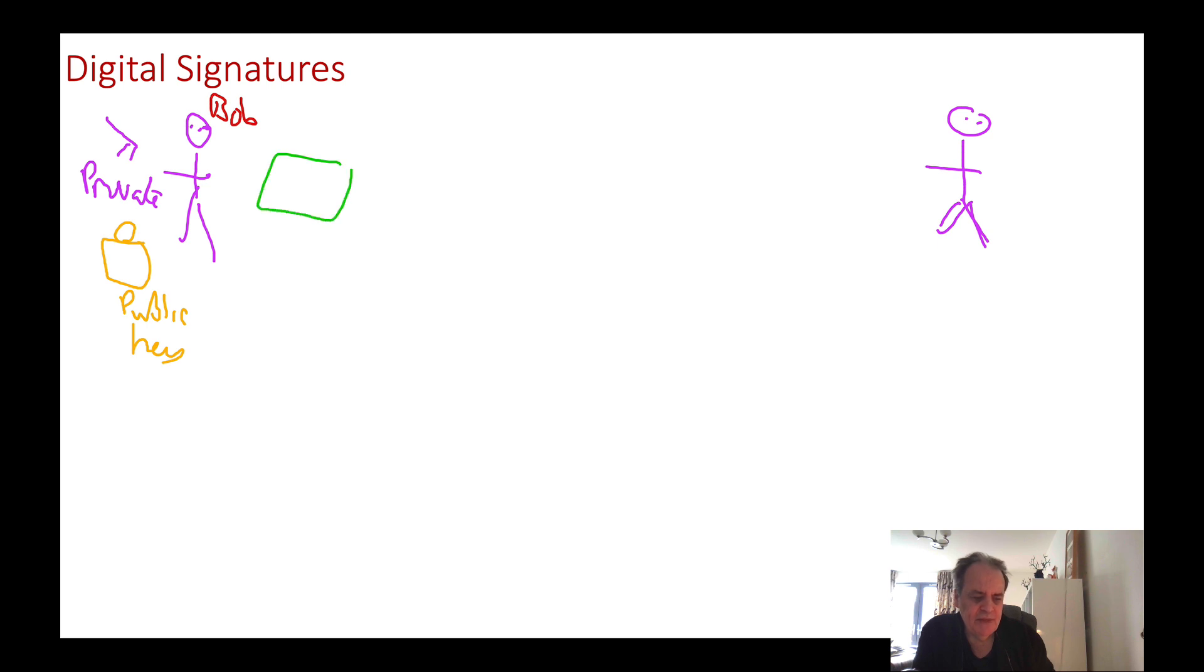We take the message, take a hash of the message, and then apply the private key to produce a signature.